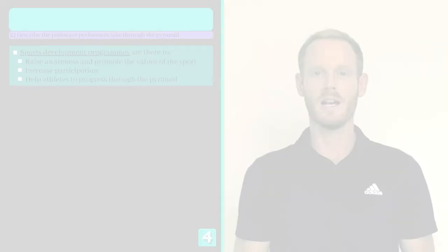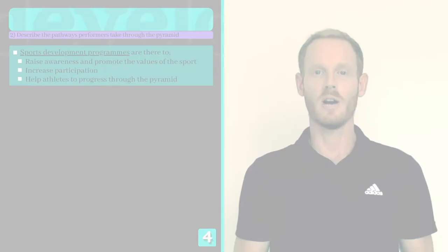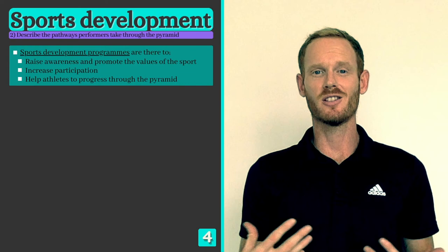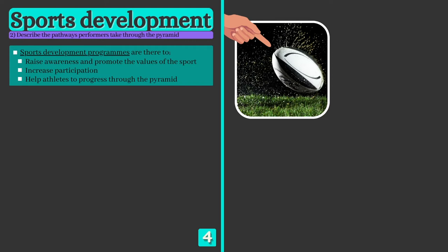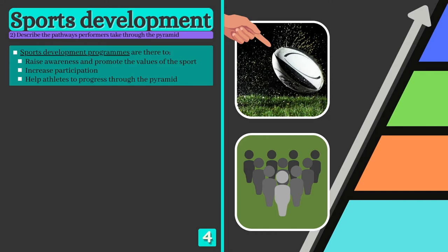Each sport has its own development programme based on the performance development pyramid. These programmes are organised by governing bodies, such as the FA, LTA or IAAF, and are there to raise awareness and promote the values of the sport, increase participation and support the progression of athletes through the levels of the pyramid. Let's take a look at some of the strategies used by a specific governing body, the RFU or Rugby Football Union, at each stage of the pyramid.